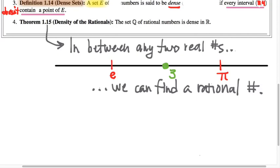So it's never possible to zoom in far enough onto the real number line such that our zooming window doesn't have at least one rational number in it.